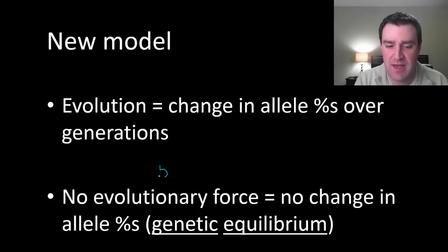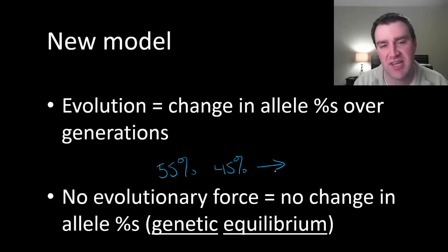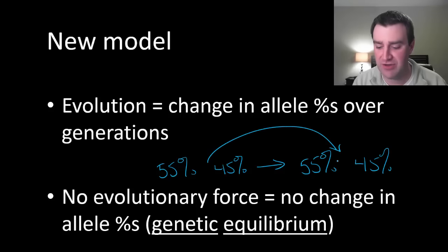Let's go back to maybe where it was 55-45 in the first generation. If natural selection weren't acting on that population, then maybe five generations later it would still be 55-45. We call that kind of no change genetic equilibrium.